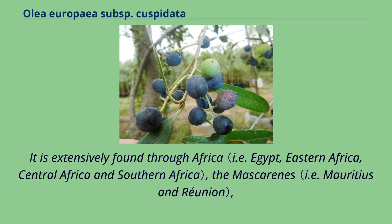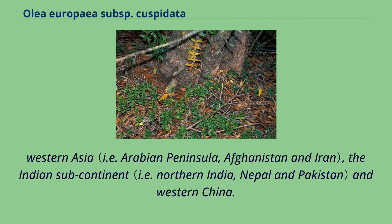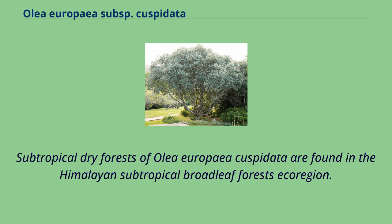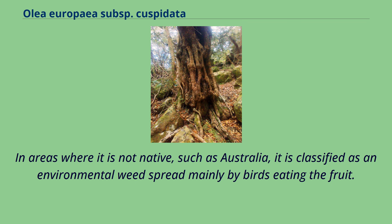It is extensively found throughout Africa, the Mascarenes, Western Asia, the Indian subcontinent, and western China. Subtropical dry forests of Olea europaea cuspidata are found in the Himalayan subtropical broadleaf forests ecoregion. In areas where it is not native, such as Australia, it is classified as an environmental weed, spread mainly by birds eating the fruit.